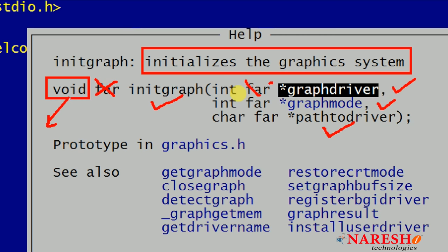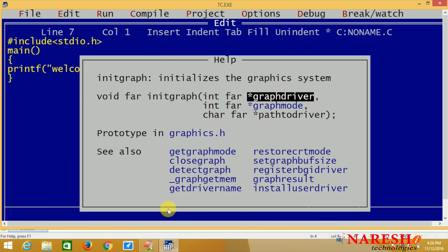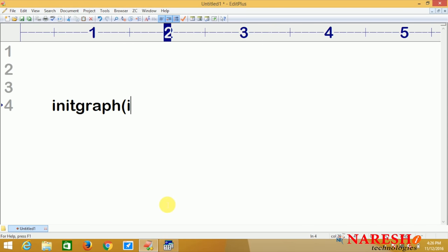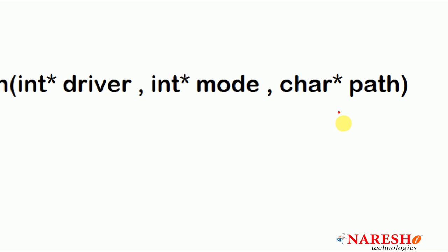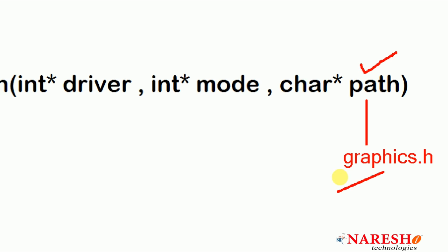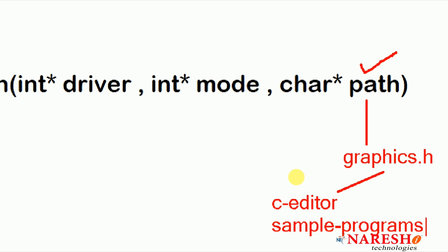The initgraph method takes an integer pointer for driver type, integer pointer for mode type, and a character pointer for path to the driver. The path to the driver is essentially the path to graphics.h. Whenever we install a C editor or C software, sample programs are available, including graphics-related programs. If you follow those programs, you will understand the path clearly.